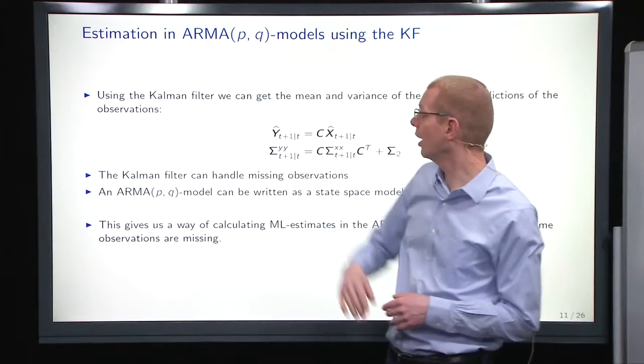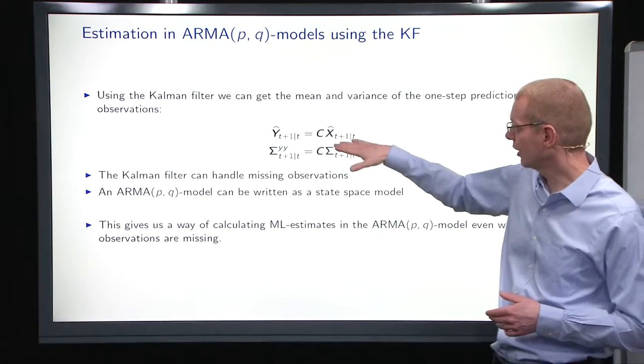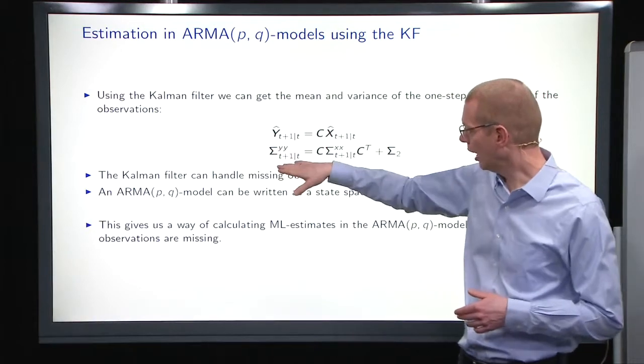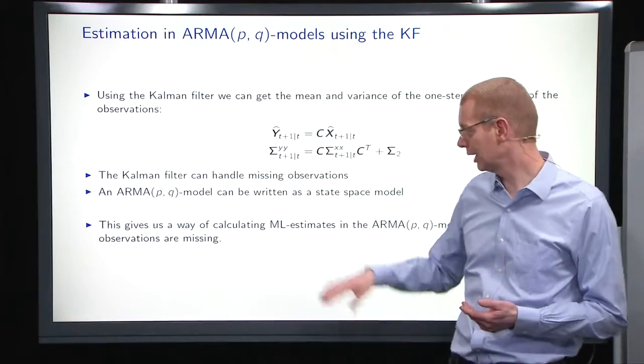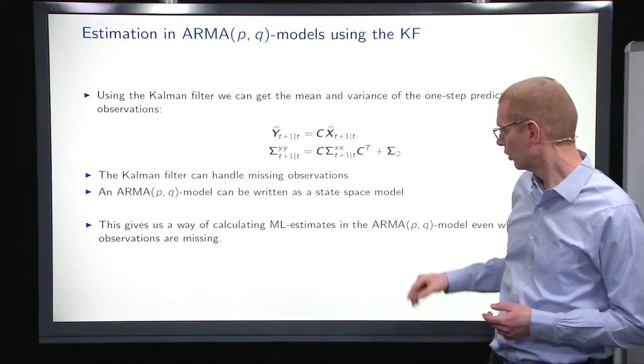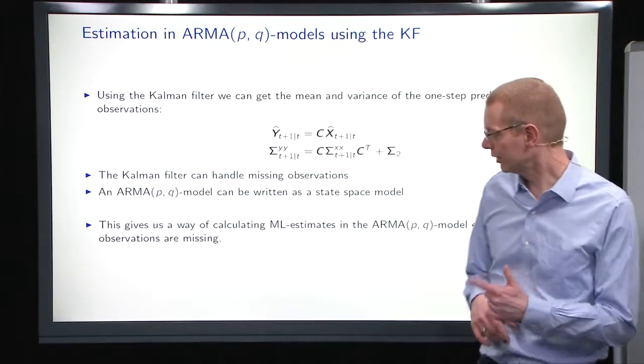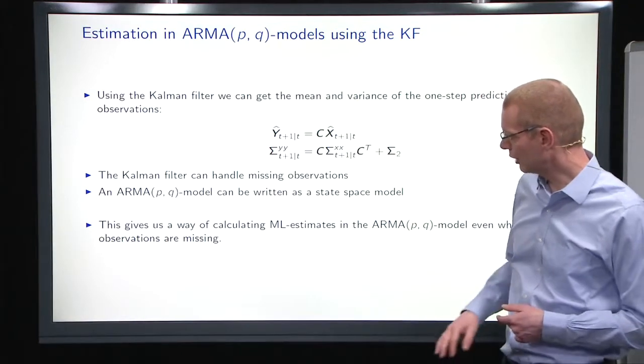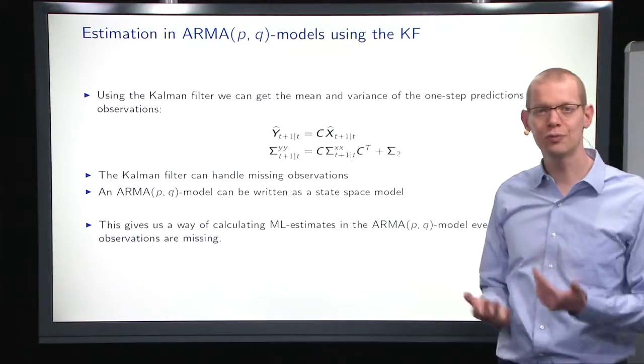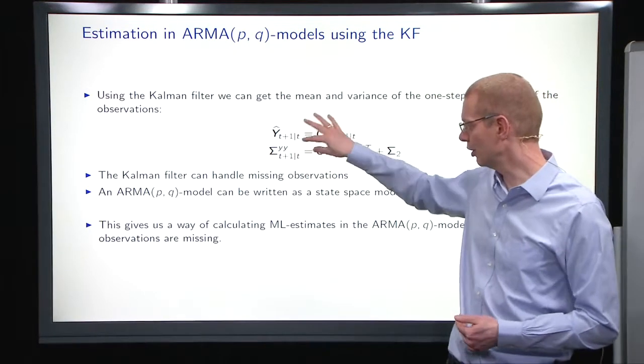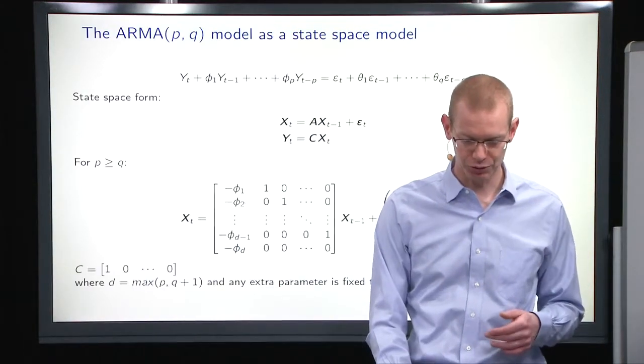If we want to estimate parameters in an ARMA model using the Kalman filter, we get the prediction in the mean and the covariance of the predictions. Then in the Kalman filter, as we just showed, we can handle missing observations. Given that we can write the ARMA model as a state-space model, we can filter it with a Kalman filter. When we have mean and variance structure, if we assume that the predictions are normally distributed, then we can do a maximum likelihood estimate of parameters in an ARMA model.